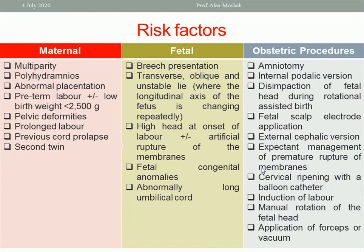Risk factors can be divided into three groups: maternal, fetal, or obstetrical procedures. Maternal risk factors include polyhydramnios, abnormal placentation like placenta previa and vasa previa, retained placenta, small birth weight, pelvic deformities, contracted pelvis, prolonged labor, previous cord prolapse, second twin, and multiparity.